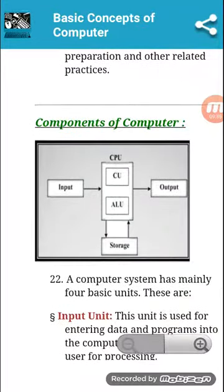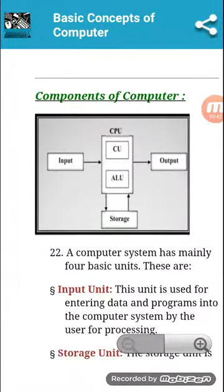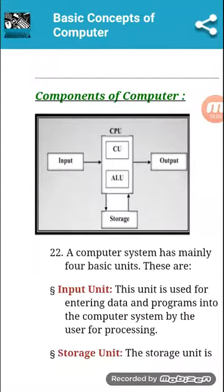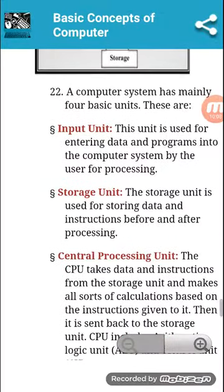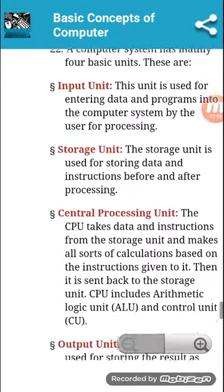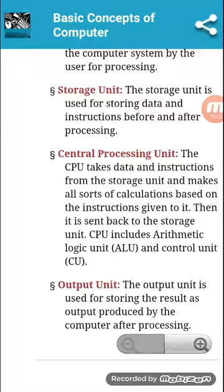What are the components of a computer? This diagram can help you understand the components. On the left side is input and on the right side is output. At the top and bottom is the CPU — central processing unit — which includes the CU (control unit) and the ALU (arithmetic logic unit), and then the storage device. A computer system mainly has four parts: input device, output device, storage device, and CPU.